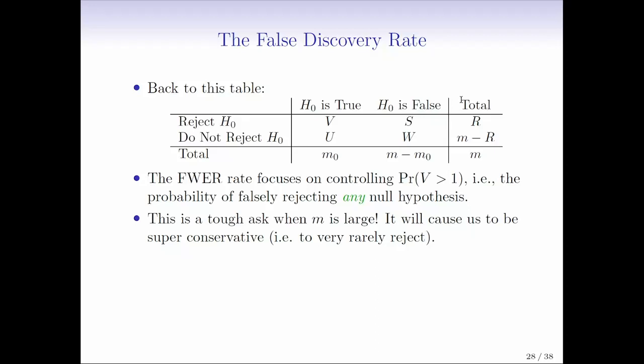But the issue is that in a lot of settings, we're not actually dealing with potentially sending someone to prison for a crime they didn't commit. In a lot of settings, we might be okay occasionally having a type 1 error. The reason we might be okay with the type 1 error is because trying to avoid any type 1 errors, like the family-wise error rate is doing, might just be too tough of an ask when M is large. It might involve just us never rejecting anything.